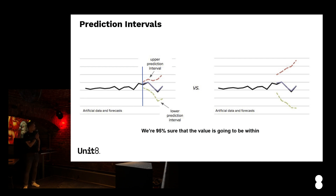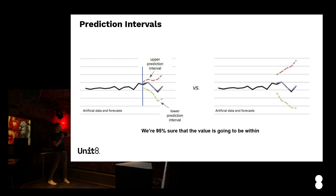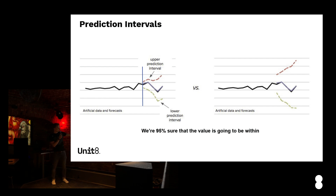One other topic is the residual — the difference between what we predicted and what was the actual value of the time series. We can also speak about prediction intervals. We are not only interested in predicting the point forecast. We are also interested in saying that with 95% probability, we can be sure the value will be within this interval. Ideally, this interval should be narrow enough, because if it's wide, it's not a very good forecast.